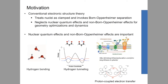Another example is malonaldehyde, which shows that hydrogen tunneling happens, and you can see the density delocalization for the transferring hydrogen. There are also proton-coupled electron transfer systems, which are abundant in many biological and chemical processes. In this kind of chemical effect, the transferring proton and the electrons behave quantum mechanically, and non-adiabatic effects are very important.